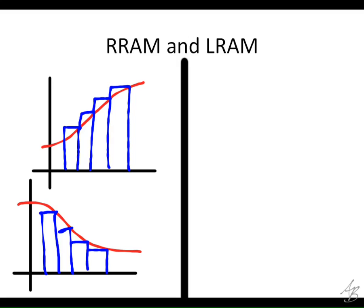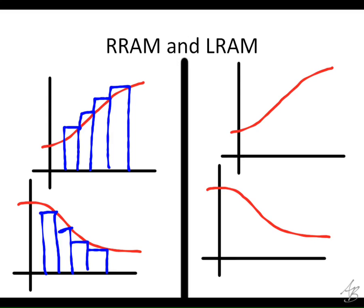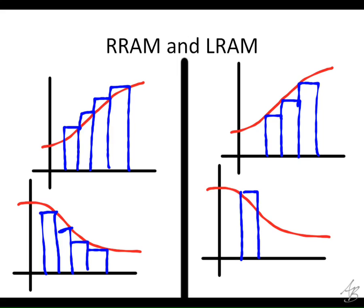With LRAM, it's going to be very similar. When we're using left rectangles and the function is increasing, it's an under approximation. With LRAM, an increasing function gives an under approximation and a decreasing function gives an over approximation. This is one of those things I don't just memorize — I visualize it. You see an increasing function, you may even want to sketch it out: increasing function with right rectangles gives an over approximation.